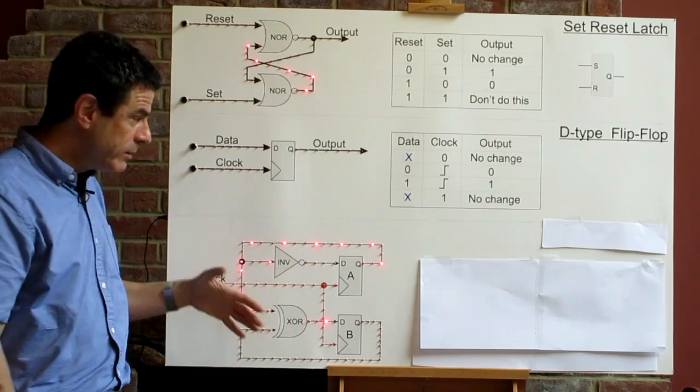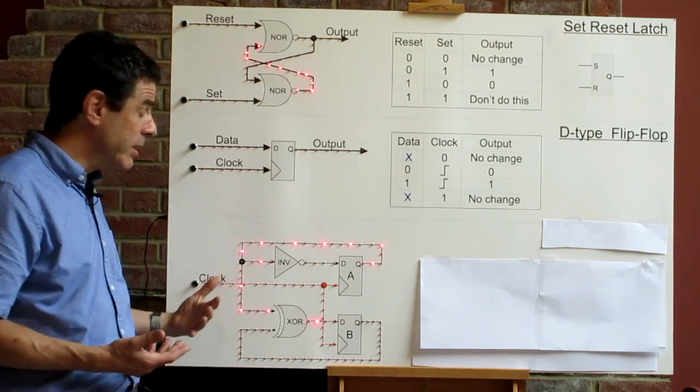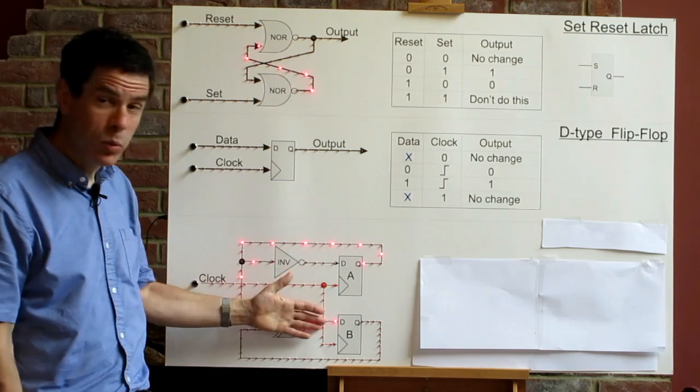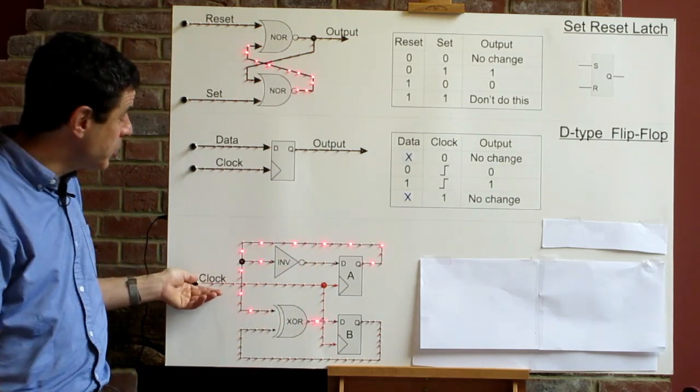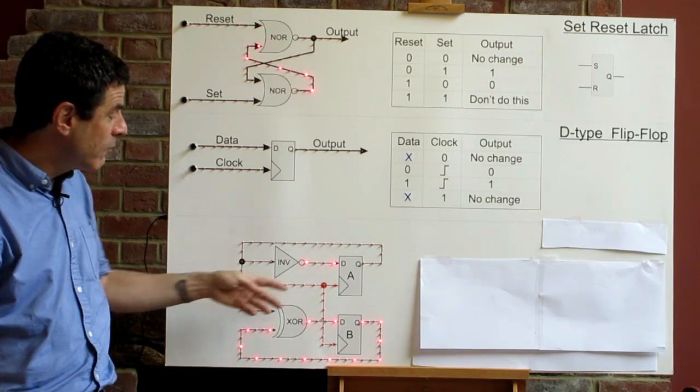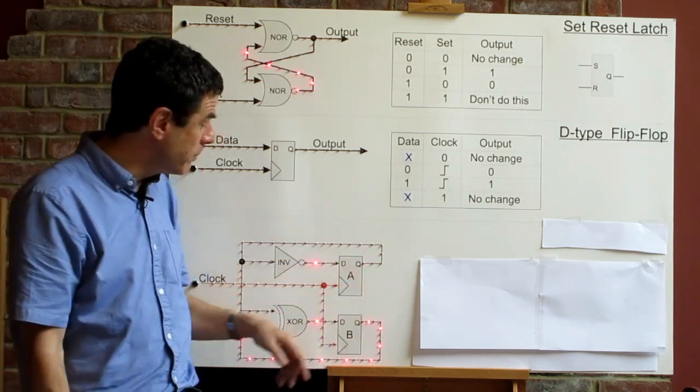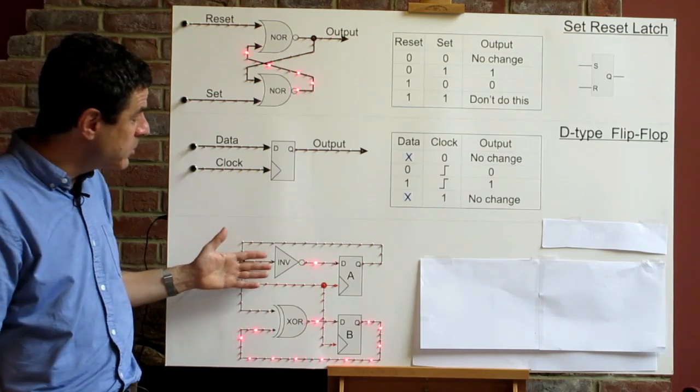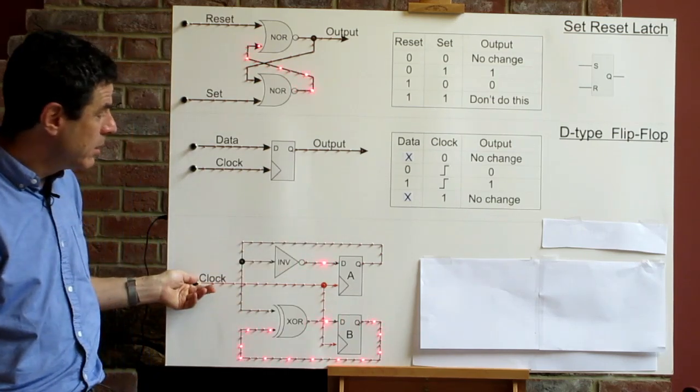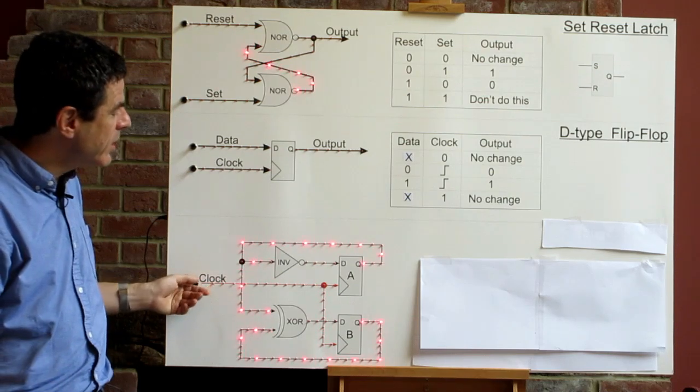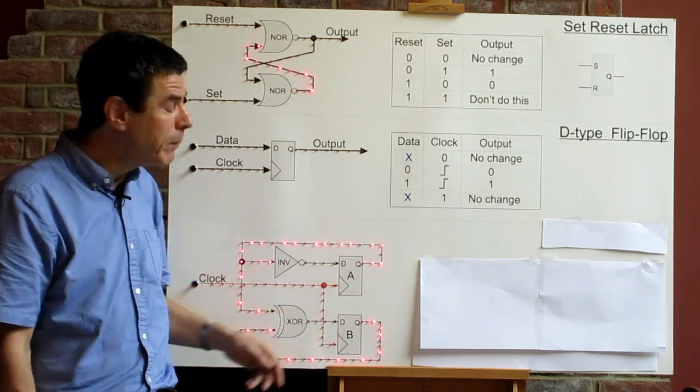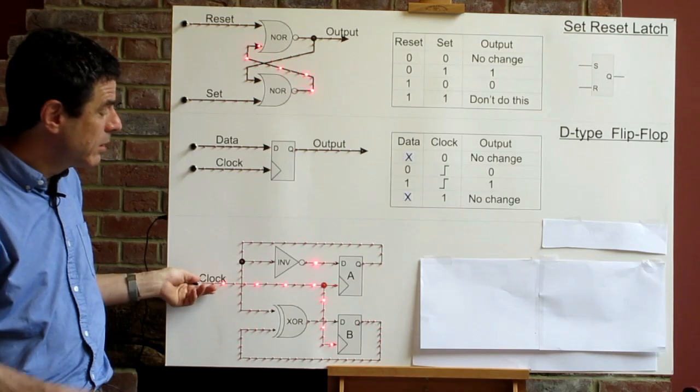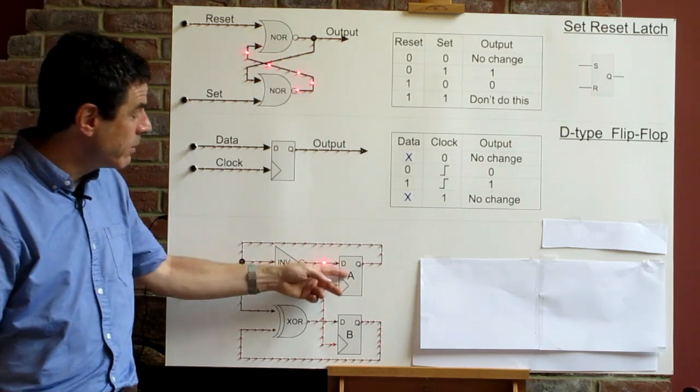The combinatorial logic has calculated what to do with those new values immediately, faster than we can see. And it's decided that next inputs should be zero and one. So if we do another transition on the clock, our flip-flops update to those values of zero and one. Again, the combinational logic has worked out the next values, which should be one and one. So if we do another clock transition, those values go through and the flip-flops become one and one. The next inputs are going to be zero and zero. So updates and flip-flops become zero and zero. And we're back where we started.